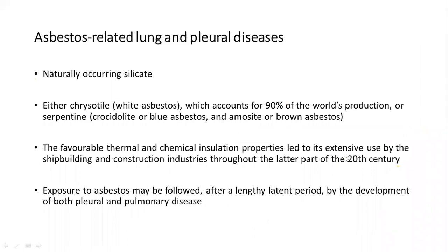Moving to the next inorganic agent: asbestos, which causes a wide spectrum of lung and pleural diseases. Asbestos is a naturally occurring silicate that, because of its favorable thermal and chemical insulation properties, has been extensively used in building and construction industries. This means a large number of people have been exposed to asbestos and suffer from asbestosis and related diseases.